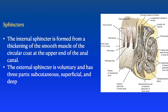It has two sphincters: an internal and an external sphincter. The internal is not under voluntary control, but the external is. The internal sphincter is formed from a thickening of the smooth muscle of the circular coat at the upper end of the anal canal, while the external sphincter is voluntary and has three parts: subcutaneous, superficial, and deep.